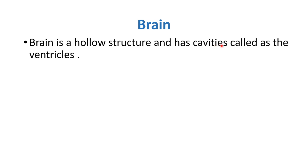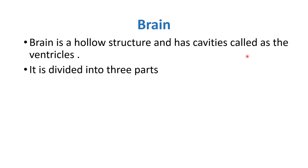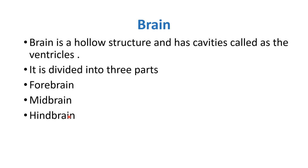The brain is a hollow structure and has cavities called ventricles. It is divided into three parts: number one is the forebrain, number two is the midbrain, and the third part is the hindbrain.